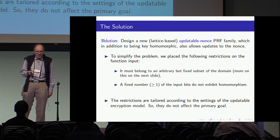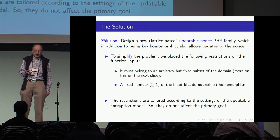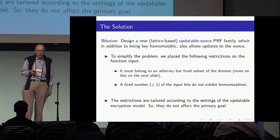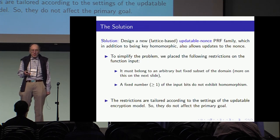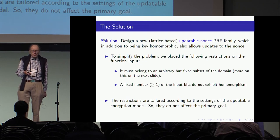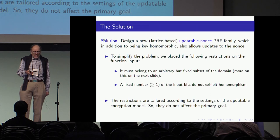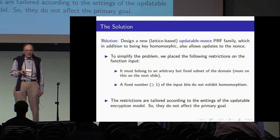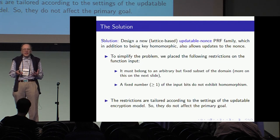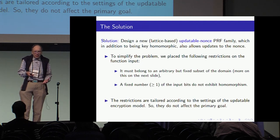The solution that we propose uses a lattice-based approach with updatable nonces — a PRF family which, in addition to being homomorphic, also allows updates of the nonces. To simplify the problem, we place the following restrictions on the function input: it must belong to an arbitrary but fixed subset of the domain, and also a fixed number of the inputs which do not exhibit homomorphisms. These restrictions are tailored according to the settings of the updatable encryption model, but importantly they do not affect the primary goal.